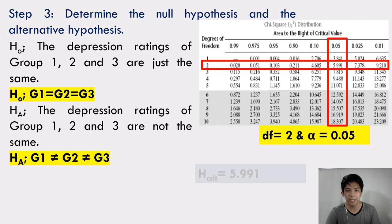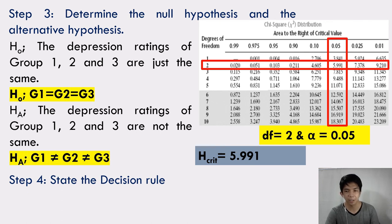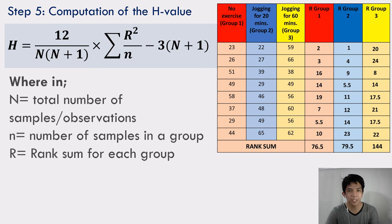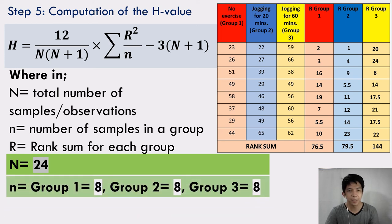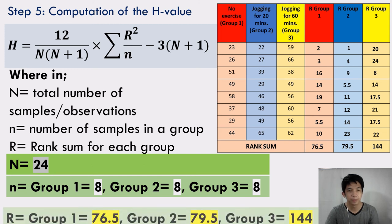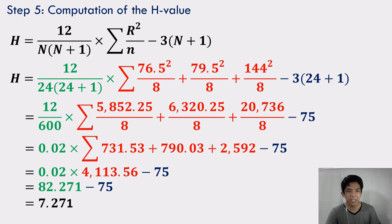Step 4: State the decision rule — if H computed is greater than or equal to the critical value, we reject the null hypothesis. Step 5: Computation of the H value. Total number of samples N = 24, with n = 8 for each group. Rank sums: Group 1 = 76.5, Group 2 = 79.5, Group 3 = 144. Based on computation, we get an H value of 7.271.